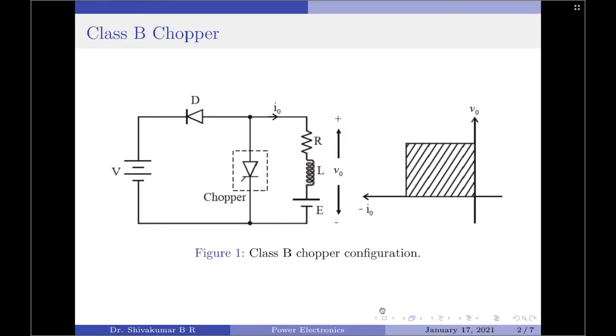The arrangement for a class B chopper for inductive load is shown in figure 1a here. Here we have used a thyristor as a chopper switch. The chopper switch is operated by closing it for a time t1 and opening the same for a time t2. The sum of the times t1 and t2 can be regarded as the chopper period, usually denoted by capital T.